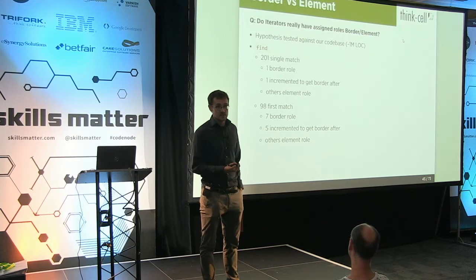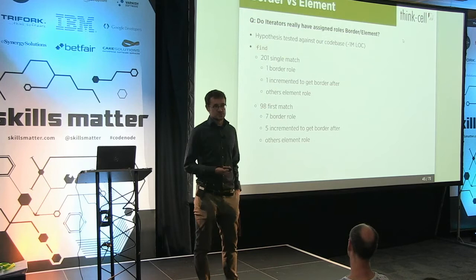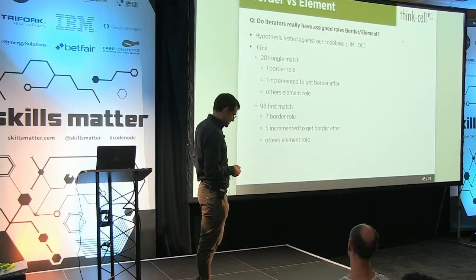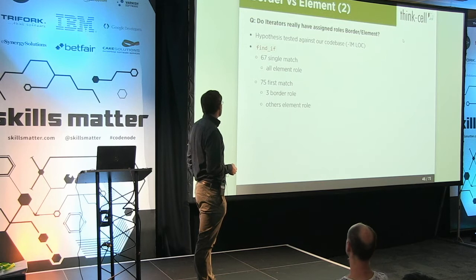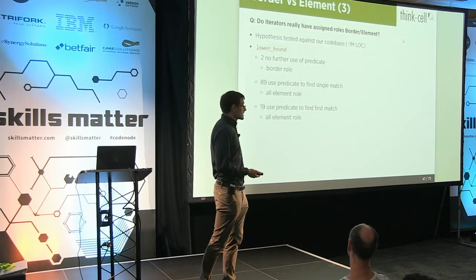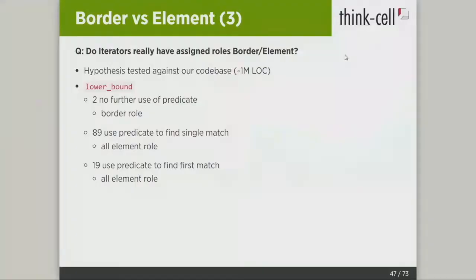Of the 98 first-match returns from find, 7 had the border role and 5 incremented to get the border after — the others were element role. For find_if: 67 single matches, all element role; 75 first matches, 3 border role, others element. Lower_bound was interesting: most of the time we were not interested in the border — most of the time we used the predicate to see if we actually had a match, doing binary search to identify the matching element. Only 2 were actually interested in the border role. Upper_bound is much more border, but 7 got decremented to get the element before.